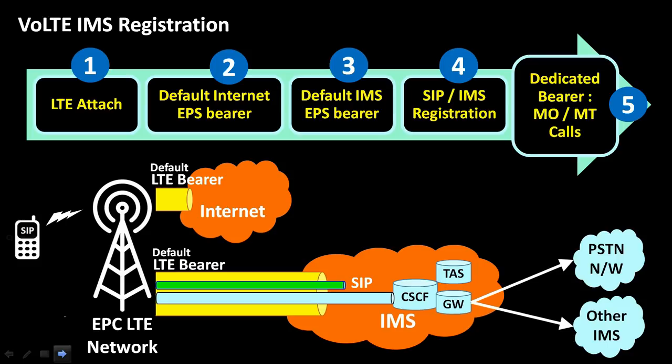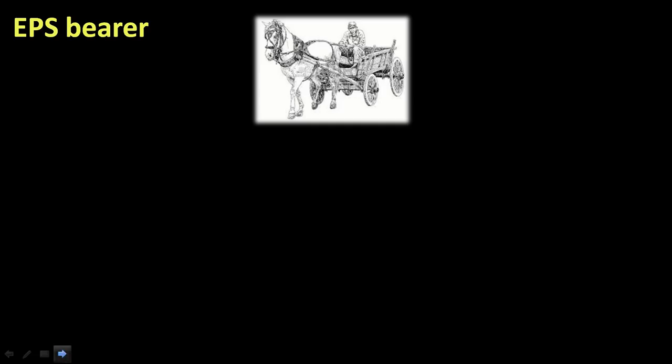There are two bearers providing connectivity, shown on screen in yellow. The first bearer is for internet connectivity. The second bearer is for the IMS network, and it carries both SIP signaling used for IMS registration and voice calls.